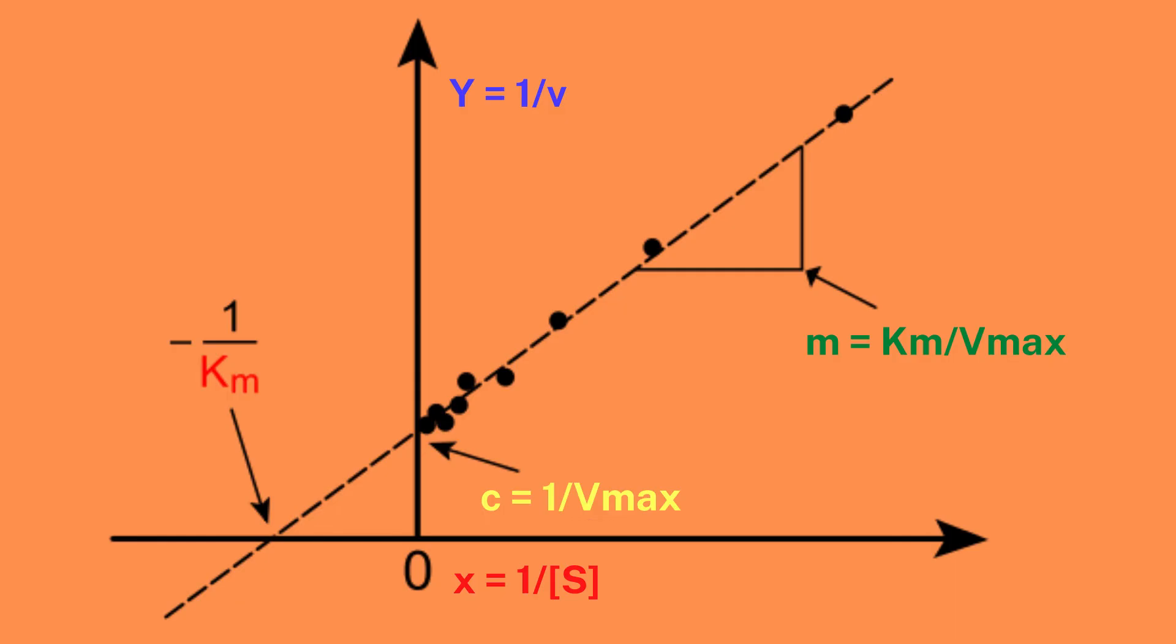In this way, the estimate of Vmax becomes easy, since we can just look at where the y-intercept occurs to get the value for 1 over Vmax.